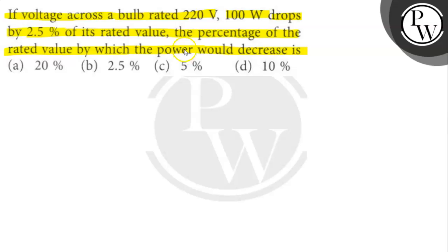The given quantities are rated voltage V is equal to 220V, rated power P is 100W, and the percentage of drop of the voltage is 2.5%. As we know that P is equal to V squared by R, we can also write R is equal to V squared by P.